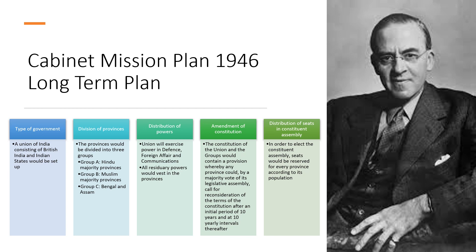First, the Cabinet Mission plan described the type of government for India. It said that a Union of India consisting of British India and Indian princely states would be set up. At the time, the entire Indian subcontinent was not all ruled by the British — there were also princely states. So the independent India would be a union of British India and Indian princely states.